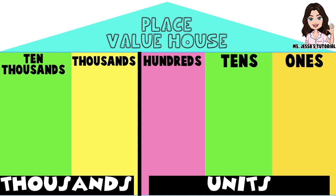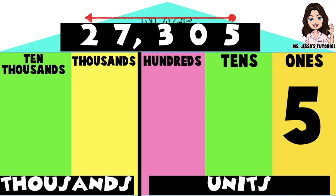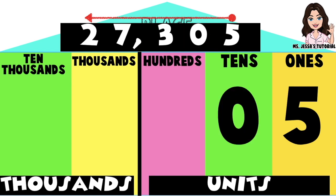Let's have an example: 27,305. In identifying the place value, you are going to start from the rightmost digit going to the leftmost digit. Digit 5 is the first digit from the right, so digit 5 will be in the ones place. Digit 0 is the second digit from the right, so digit 0 is in the tens place. Let's go now to the third digit from the right — digit 3. Digit 3 is in the hundreds place.